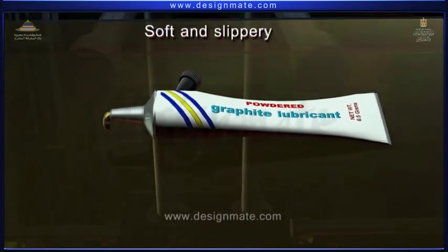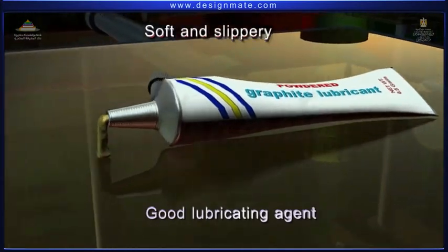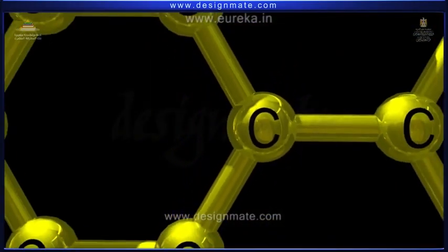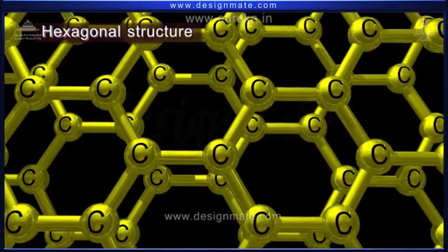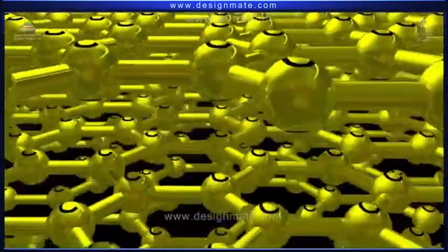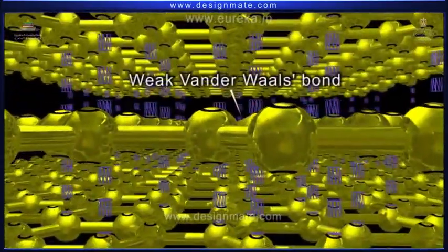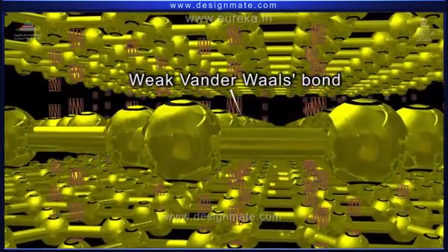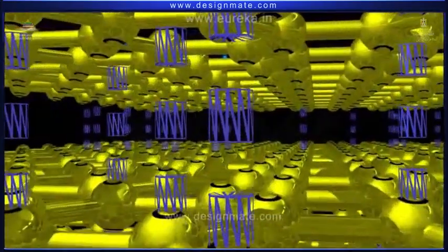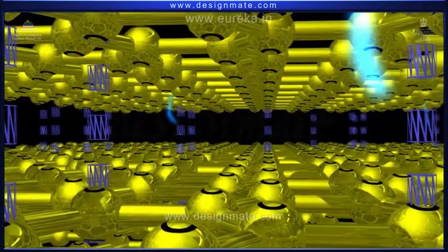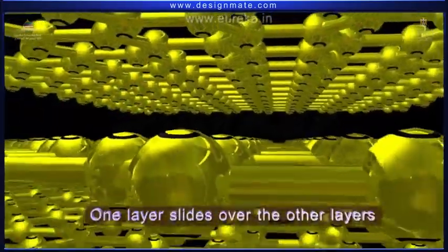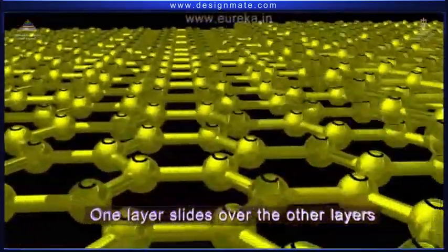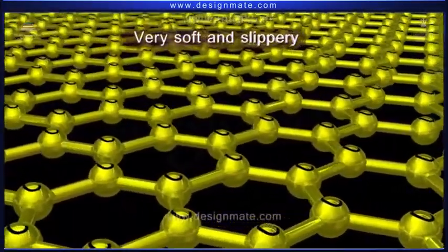Graphite is soft and slippery, thus used as a good lubricating agent. In graphite, carbon atoms form a hexagonal structure, which are held in different layers. There are weak van der Waals bonds between these layers. When the external force is applied, the van der Waals bonds cannot withstand the force, and one layer slides over the other layers. This makes graphite very soft and slippery.